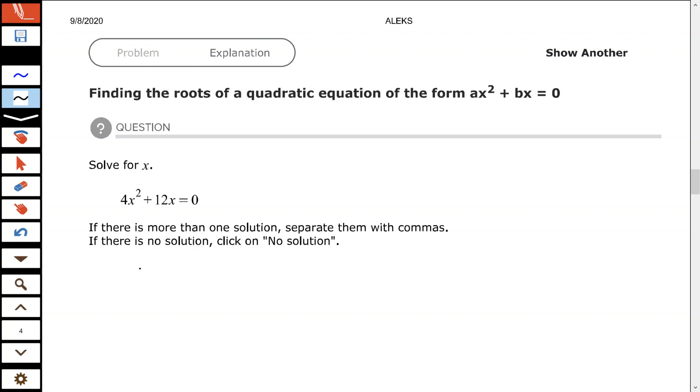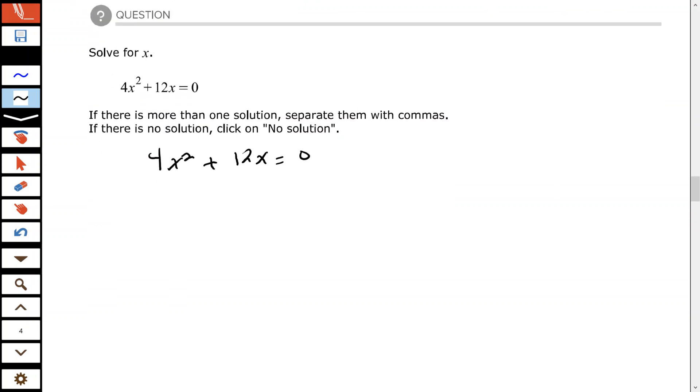So I'm going to factor 4x squared plus 12x by factoring out 4x. Let's rewrite this down here, so we have 4x squared plus 12x equals zero. I'm going to factor out 4x, the greatest common factor.